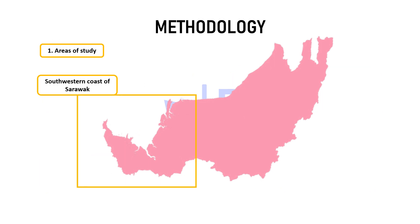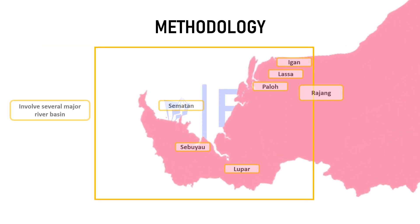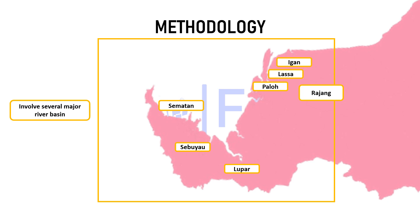The area of study covers the southwestern coast of Sarawak, involving several river basins such as Matan, Sebeliau, Lupa, etc., and also has sub river basins such as Ikan, Hasa, and Paluk.